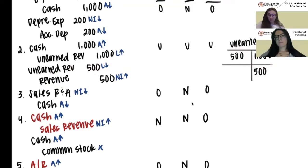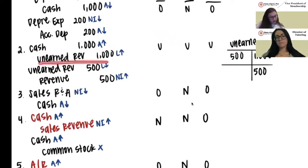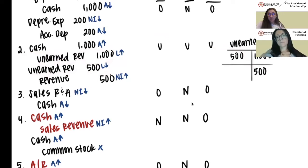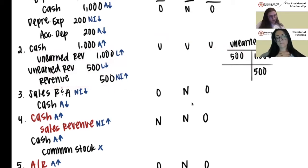For the answer: assets should have been increased but weren't, so assets are understated. Liabilities should have been increased by $1,000 then decreased by $500, a net increase of $500, so liabilities are also understated. Revenue was never recorded, which means net income was never increased, so net income is understated.